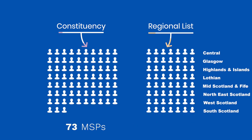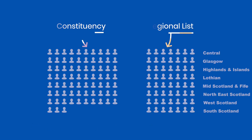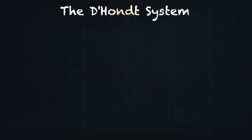There are 73 constituencies in total and 8 regions, each region consisting of 7 list MSPs. List MSPs are allocated to the region they are standing in through a method known as the D'Hondt system.